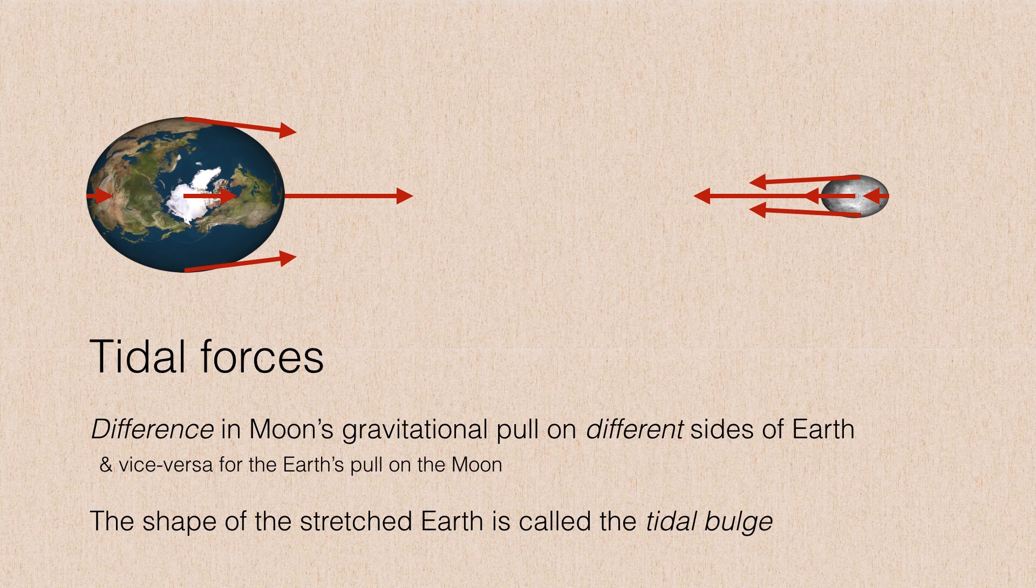So the difference in all these gravitational attractions act to stretch the Earth just a little bit. And the difference in the gravitational attractions are called tidal forces. The key thing is that tidal forces aren't brought about just by the Moon's gravity on the Earth, but because of the difference in the Moon's gravitational pull on different sides of the Earth.